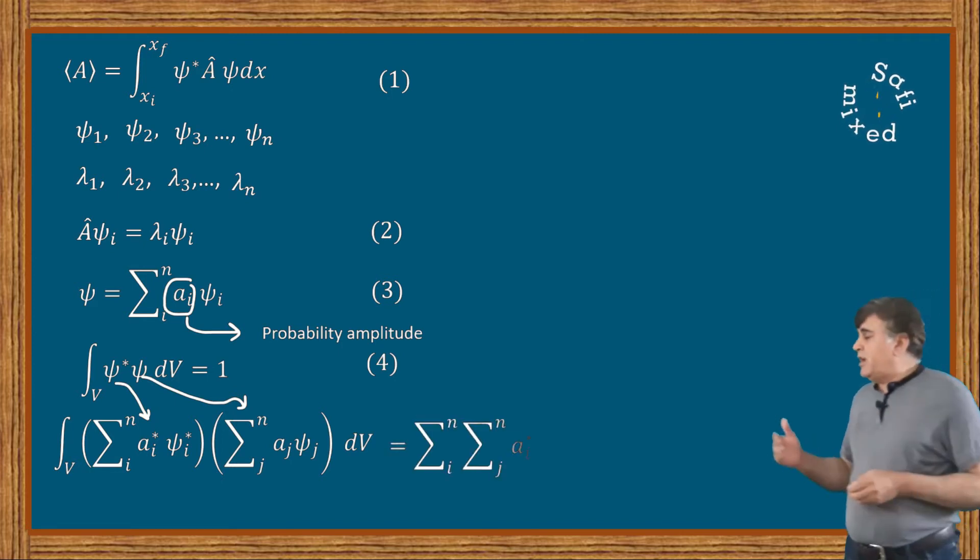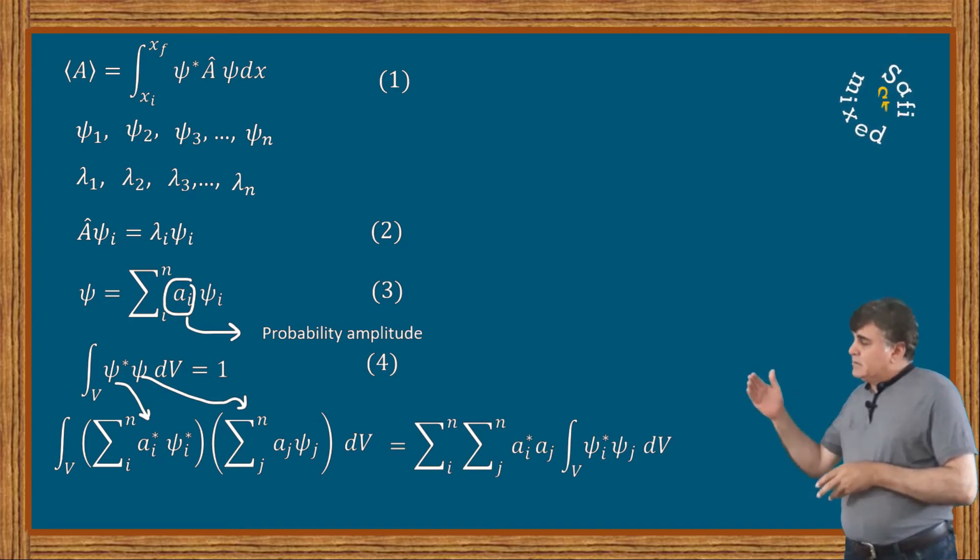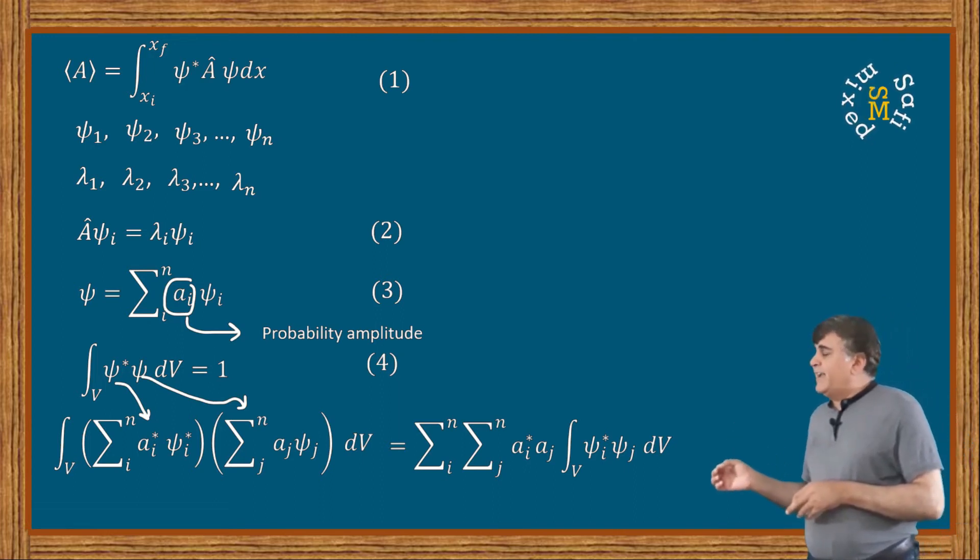Finally, we can put the equation into this form where I have taken the probability amplitudes out of the integral and have taken only the product of the eigenfunctions inside the integral over the volume V.